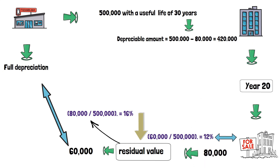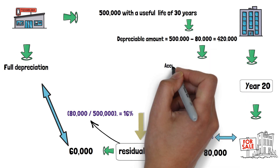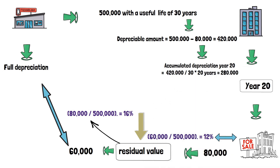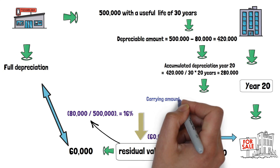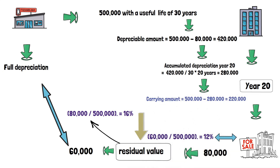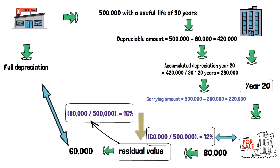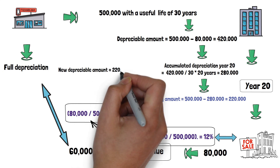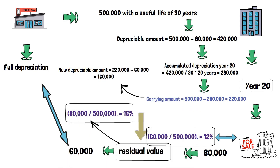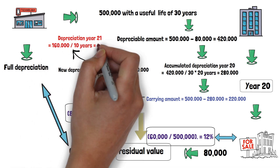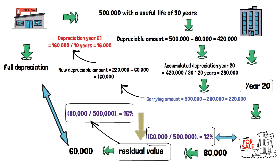In this case, the depreciable amount equals 420,000. For year 20, the accumulated depreciation of the asset will equal 280,000, and its carrying amount will equal 220,000. However, from year 20 onwards, it must be taken into account that the residual value went from 80,000 to 60,000. To calculate the new depreciable amount, we take the carrying amount at the end of year 20 and subtract the modified residual value. The depreciation expense for year 21 will be 16,000, which is equivalent to dividing 160,000 by 10 years of remaining useful life.